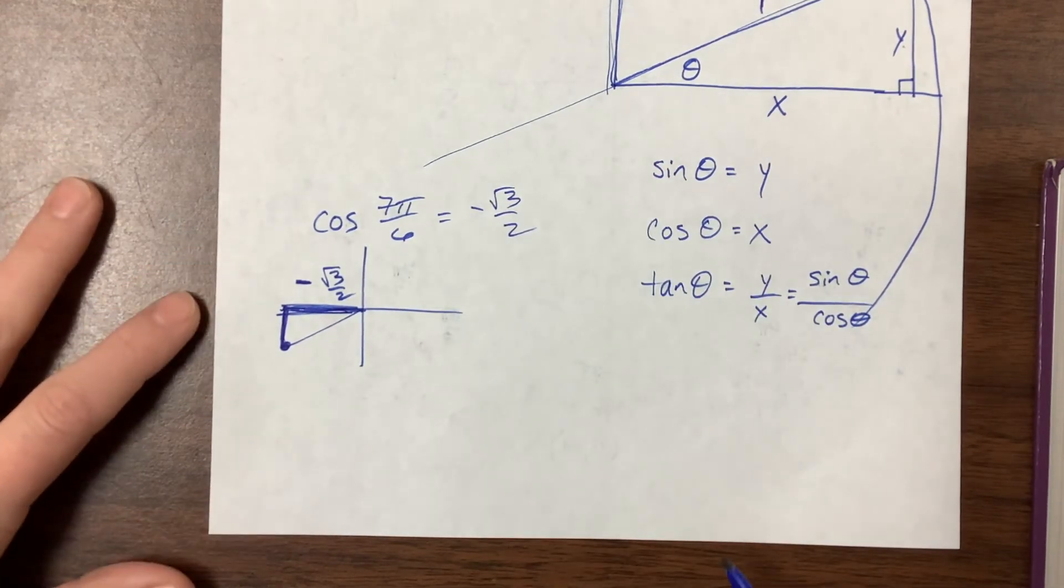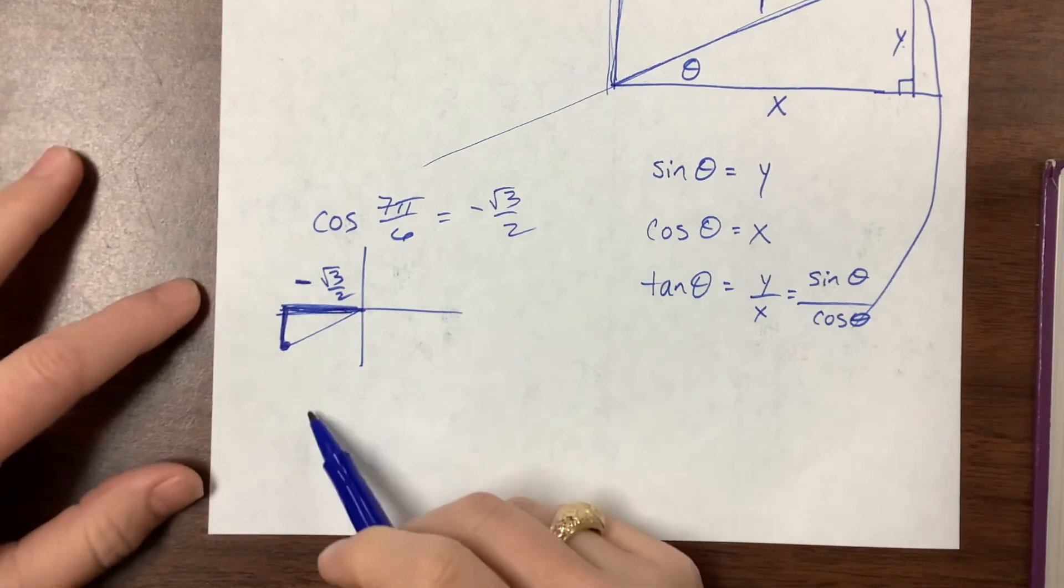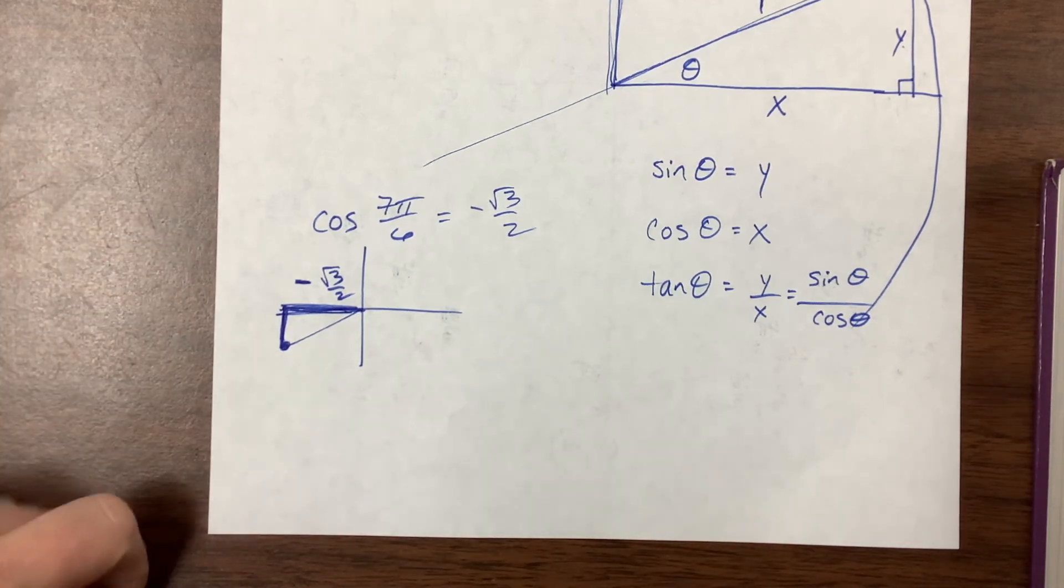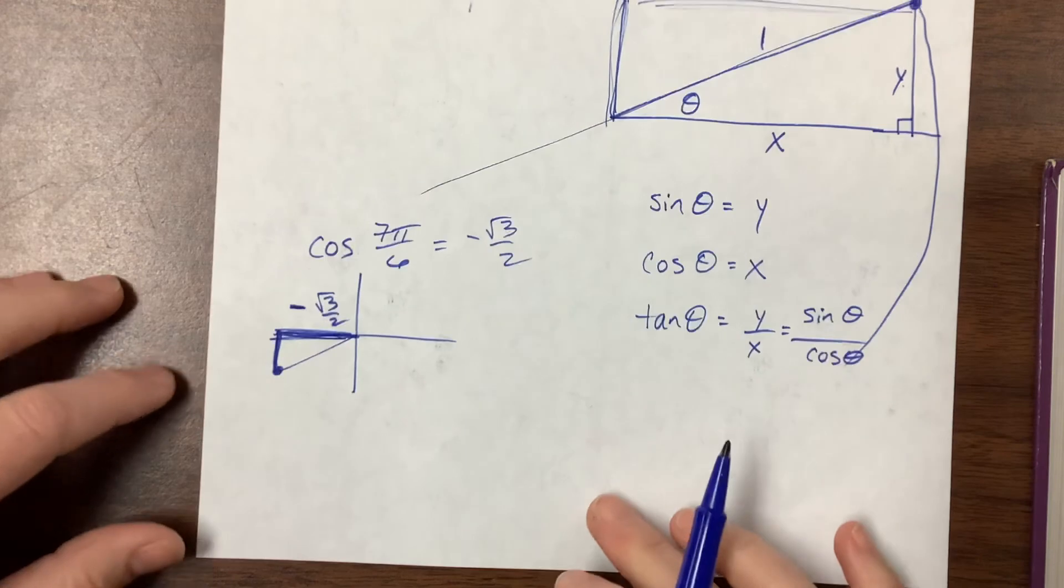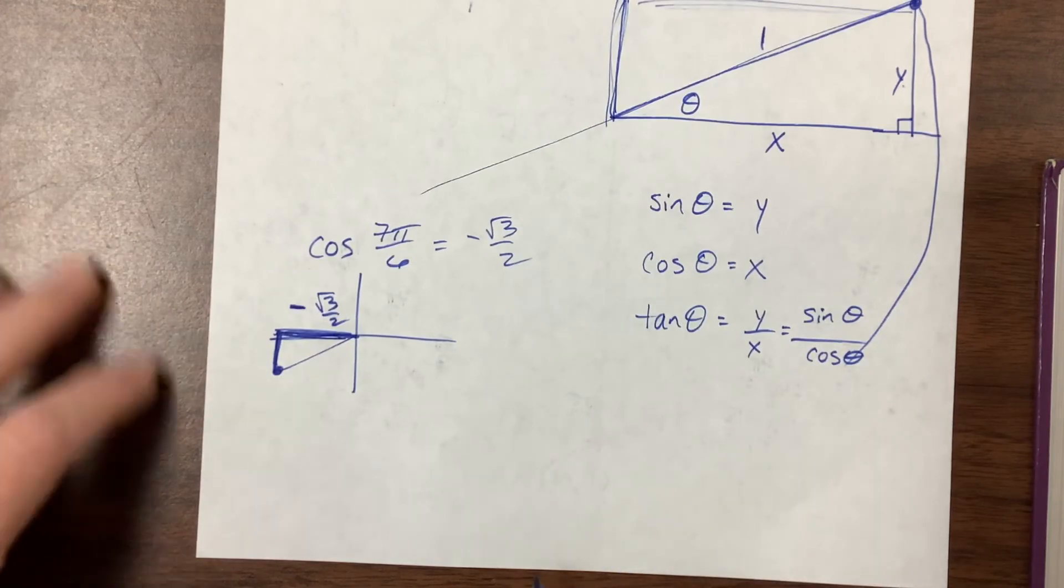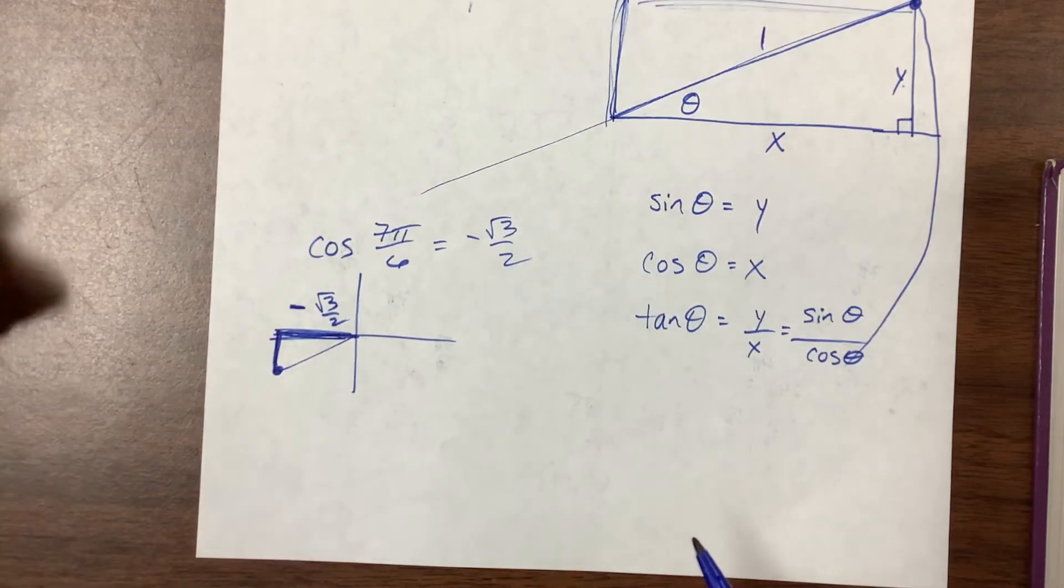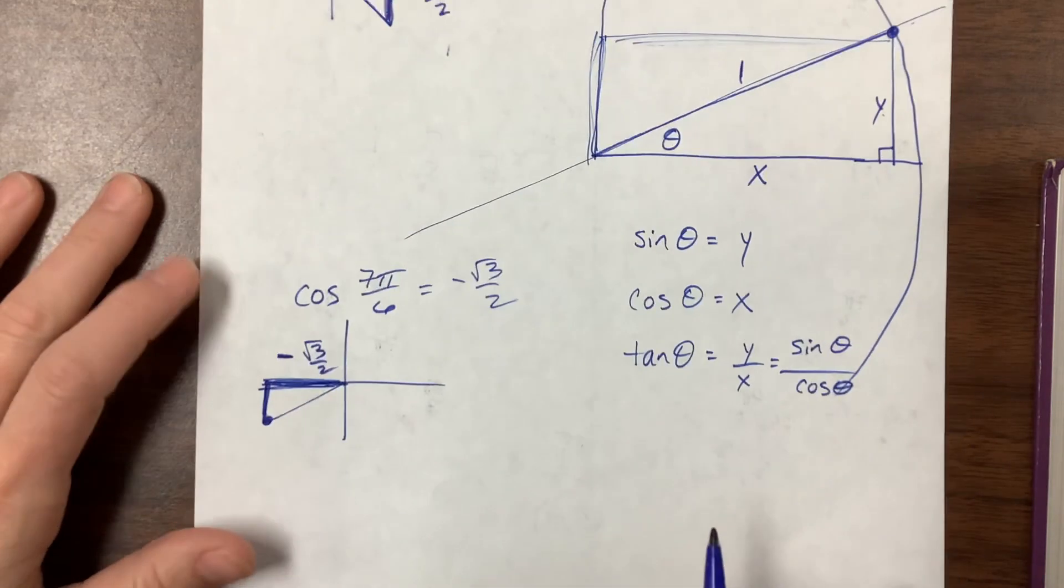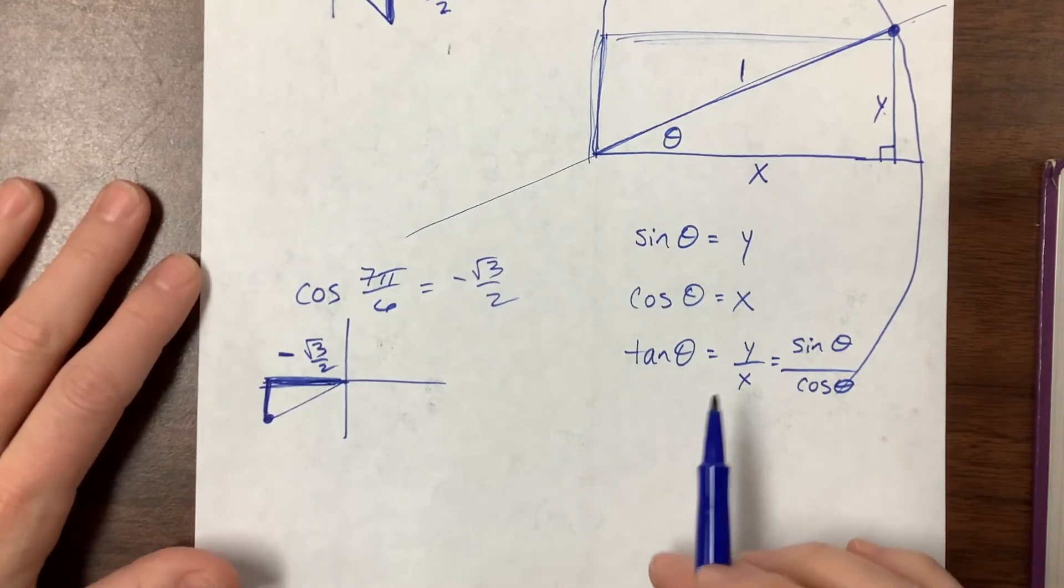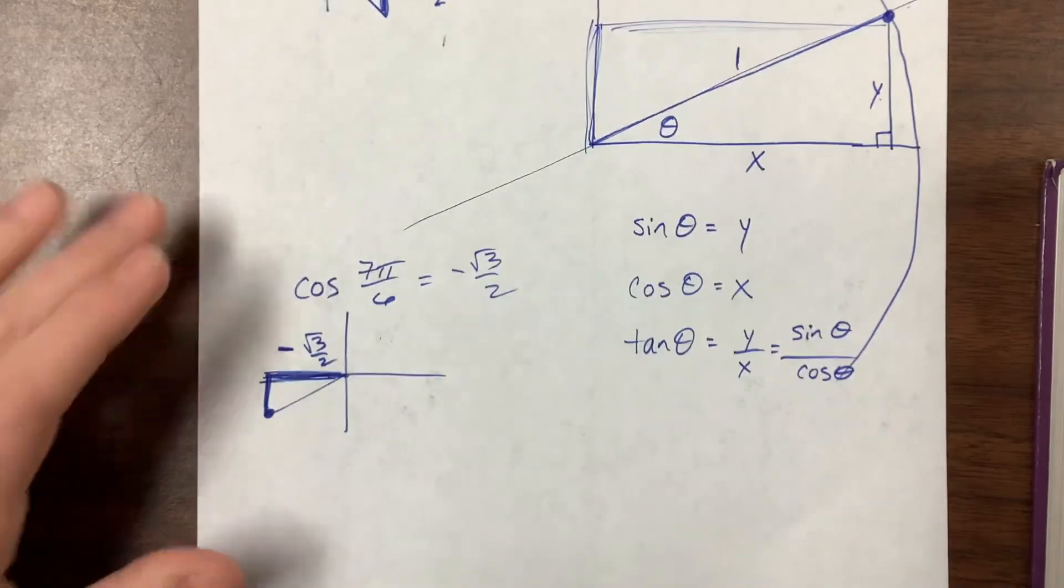The more you practice this, the faster you'll get, and you don't need to draw the little picture to know where it is. You can just see it in your head. That is the goal, and it's hugely important moving forward to be able to know all of these values on the unit circle. Practice, practice, practice, and good luck to you.